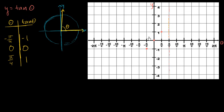The graph is approaching infinity there, so it looks something like this — the slope of the ray as you get closer and closer to pi over two gets closer and closer to infinity. And what happens when the angle is getting closer and closer to negative pi over two? The slope is getting more and more negative, approaching negative infinity. So we have a vertical asymptote there too, and we are approaching negative infinity. That's what the graph of tangent of theta looks like over this section of the theta axis.